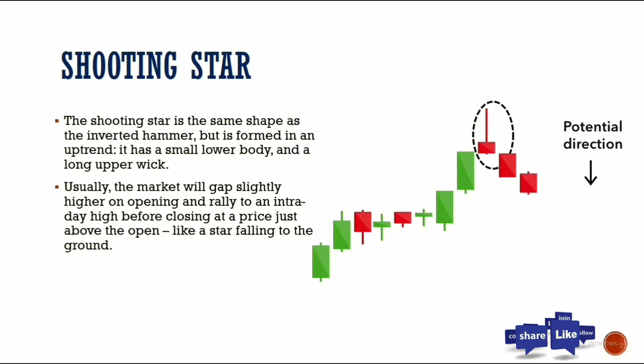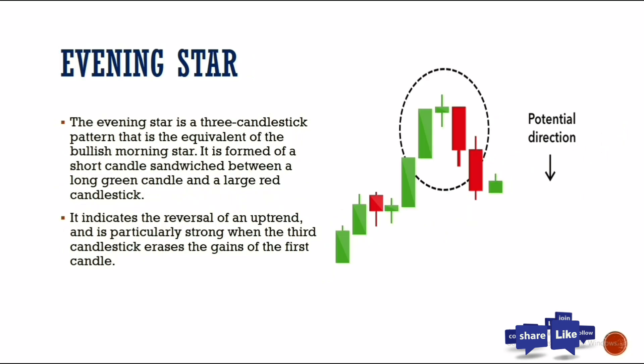Next is the shooting star, which is the same as the inverted hammer — it has a long upper wick and a small body, but it forms after a strong bullish move. Anytime we see a strong bullish move followed by this kind of candle, it tells us the potential direction is to the downside.